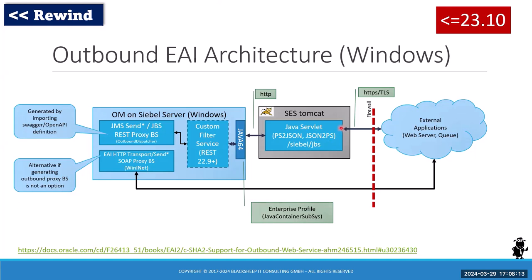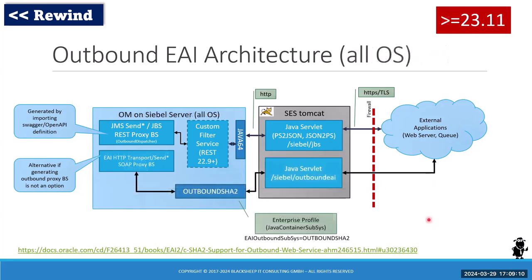That Tomcat makes the actual physical connection — that's the same on every OS: Linux, Unix, Windows. But Windows is special. Until 23.10, any other HTTP transport — including native business service calls to HTTP transport and the SOAP proxy — used WinInet, the Windows Internet library. So it made a direct connection from the Windows shell to the external application, not using Tomcat. That's a big difference in the Windows-based architecture.